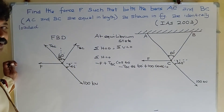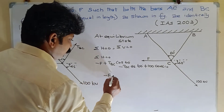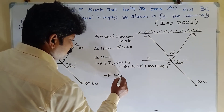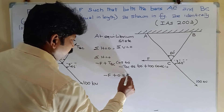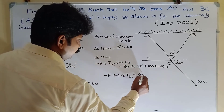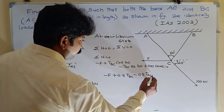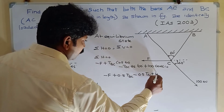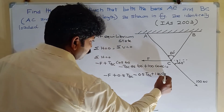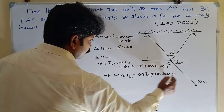Cos 60 equals 1/2, so 0.5 TBC minus 0.5 TAC, and the horizontal component involving 100 cos of the particle angle, equals 0.